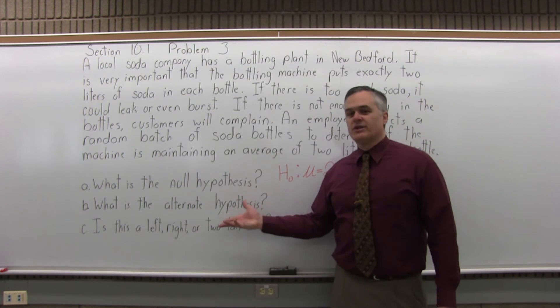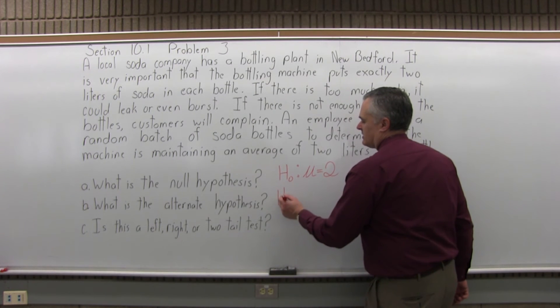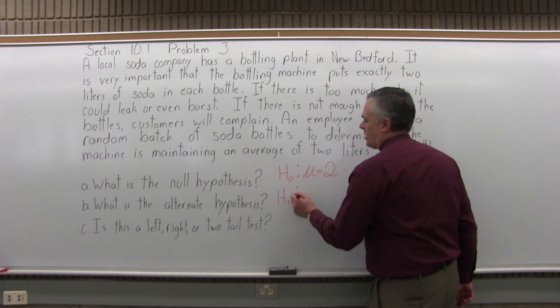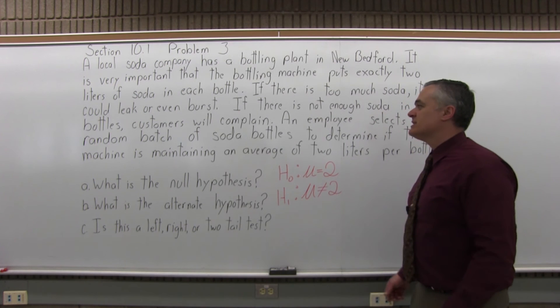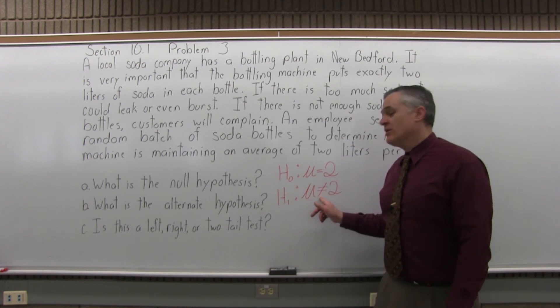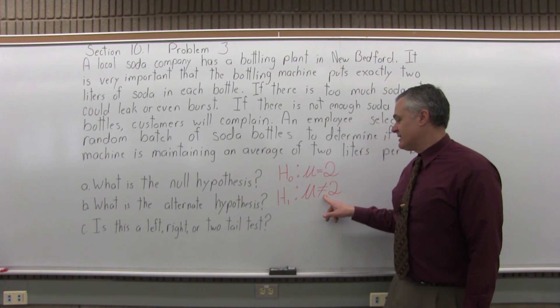So what is the alternate hypothesis? The alternate hypothesis notation is capital H subscript 1. You're going to have a mu, it's still going to be a 2. Now, the symbol in this case is not equal to, because we want to see if it's putting in more or less. Either case would be critical. So, it's a 2-tail test.